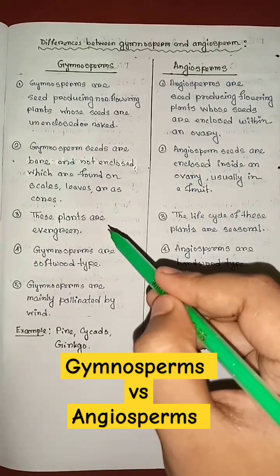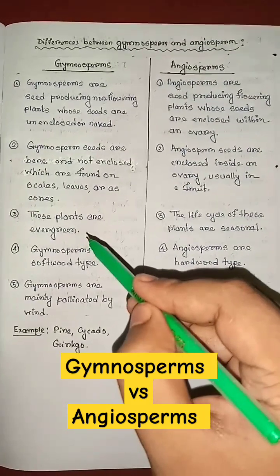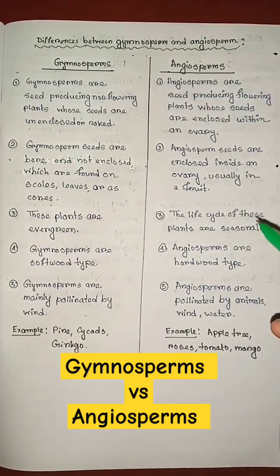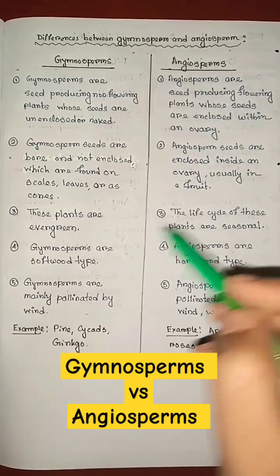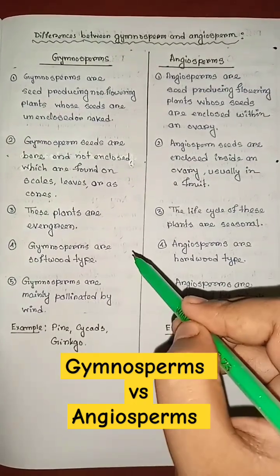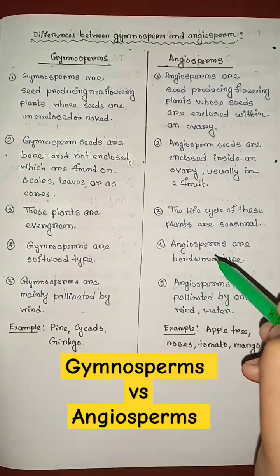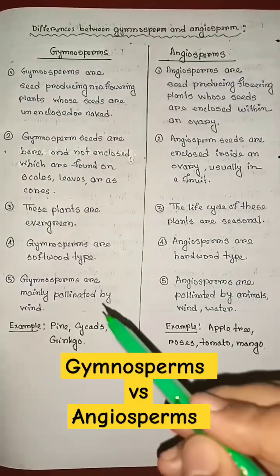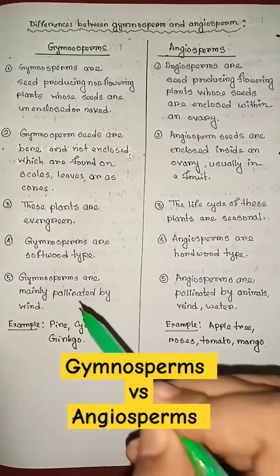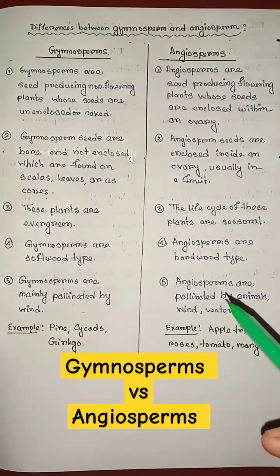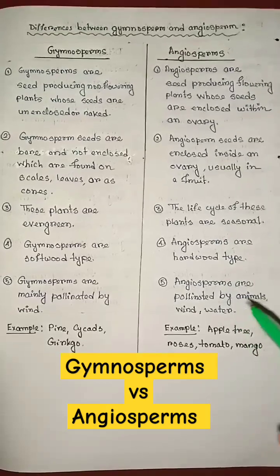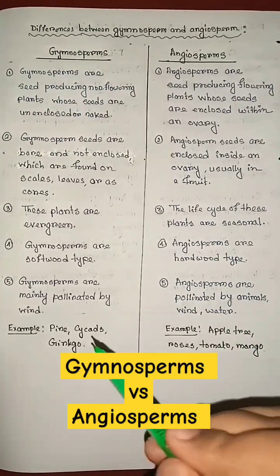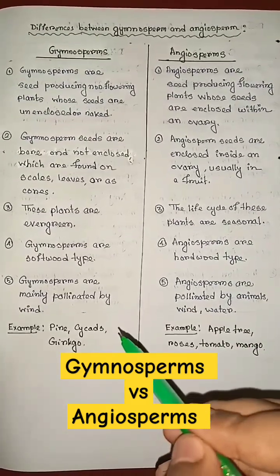Gymnosperm plants are evergreen, but the life cycle of angiosperm plants is seasonal. Gymnosperms are softwood type, but angiosperms are hardwood type. Gymnosperms are mainly pollinated by wind, but angiosperms are pollinated by animals, wind, and water.